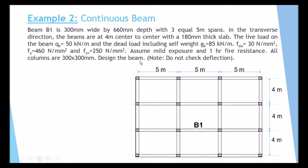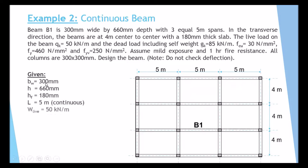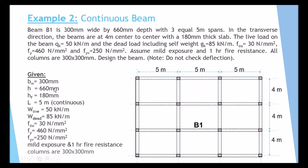FCU is 30, FY yield is 250 for the shear reinforcement, 460 for the main reinforcement. Mild exposure, one hour fire resistance, columns 300 by 300. Required to design the beam, and as a note, don't check deflection — they did not ask for it. So to summarize: B-web is 300, H is 660, HF is 150, span is 5 meters, live load 50 kN/m, dead load 85 kN/m, FCU 30 MPa, FY 460 and 250, mild exposure, one hour fire resistance, columns 300×300.